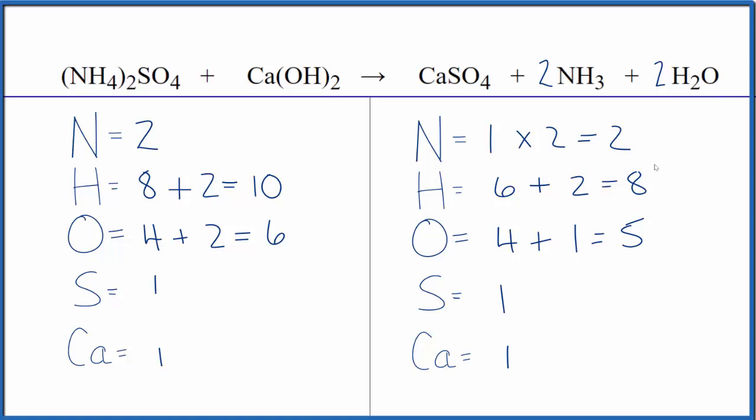Two times three is six plus two times two is four, giving us ten hydrogen atoms. They're balanced. For oxygen, four plus two times one gives us six. We've balanced this equation.